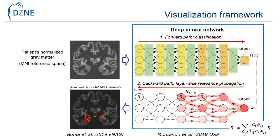For visualization we used the layer-wise relevance propagation algorithm, which was shown to work well for 3D CNN models for brain images by Boehler and colleagues in 2019. For a given scan, the model is traversed in backward direction to estimate each individual node's activation and thereby trace the contributions of individual image patterns layer by layer. The derived relevance maps can then be shown as color-coded overlays on the patient's normalized gray matter images.